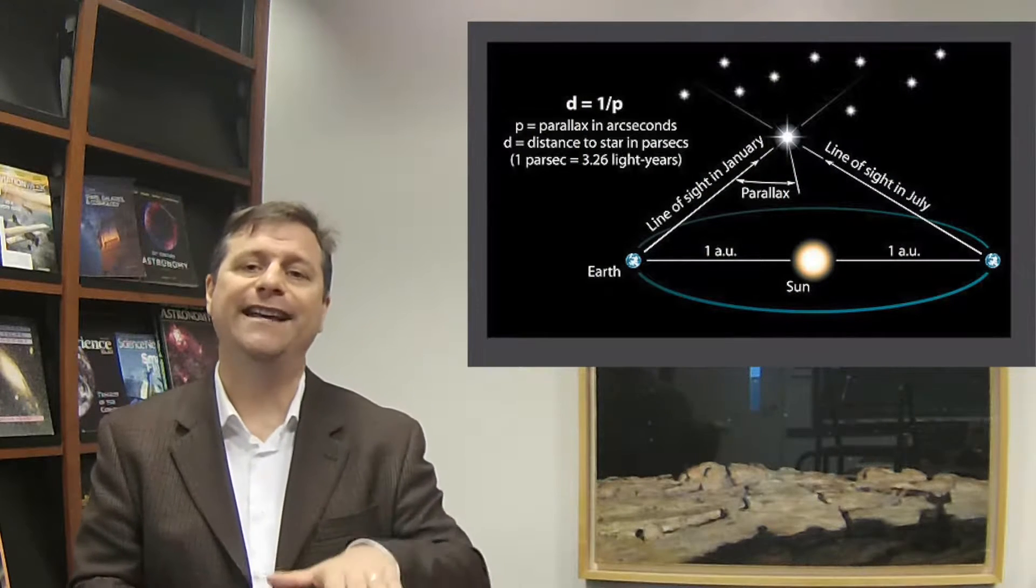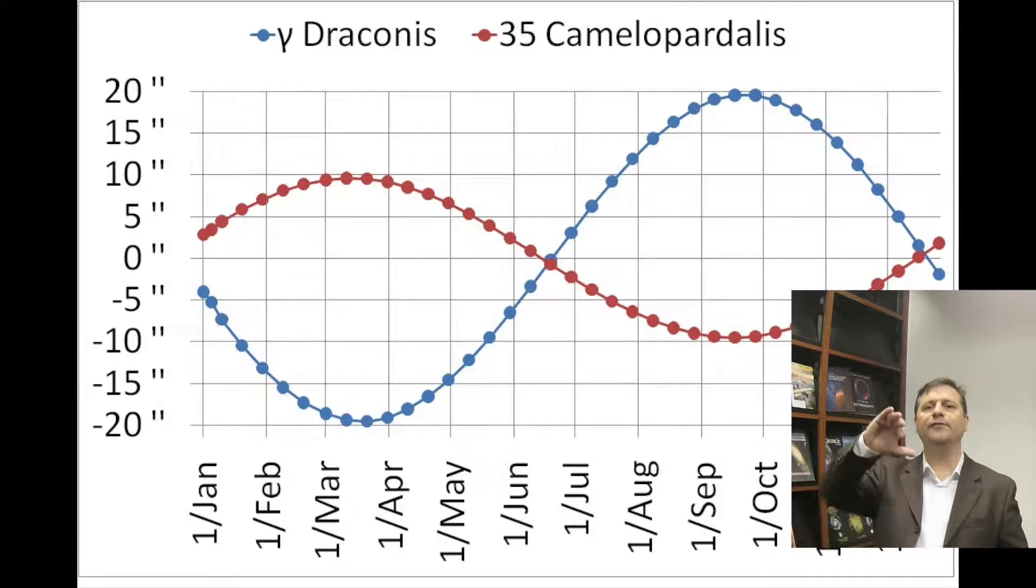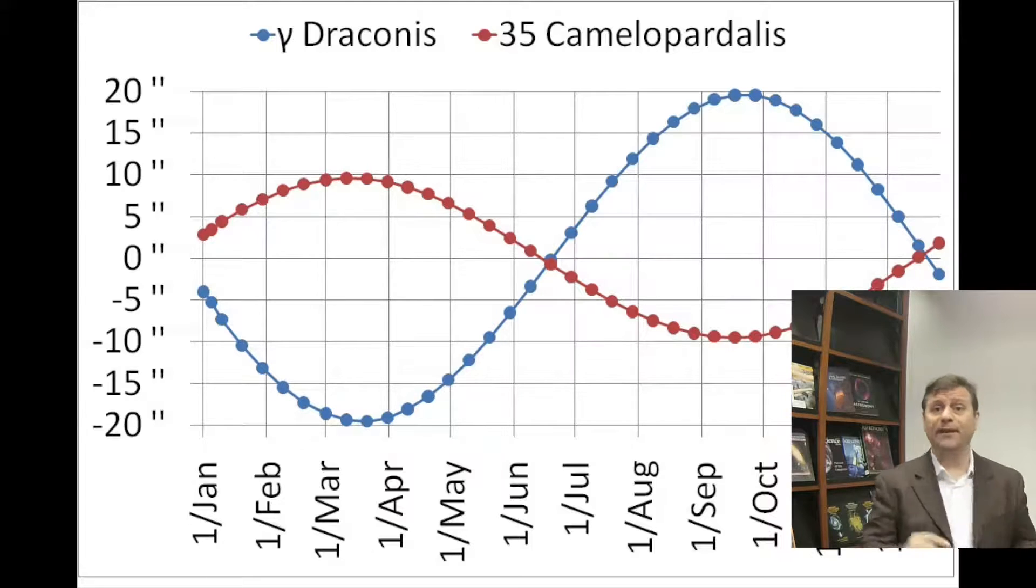Because he was trying to find parallax, he was trying to find the annual motion, the annual change of the position of a star as the Earth was going around. So every star should have the same kind of parallactic motion if it's in the same direction of the sky. But what he found was that Gamma Draconis had this very strange motion. Over the course of a year, it would drift a little bit southward and then drift back to center and then drift a little bit northward and then back. This drifting initially he thought was parallax.